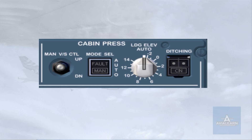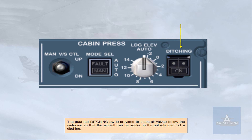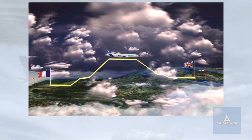The guarded ditching switch is provided to close all valves below the water line so that the aircraft can be sealed in the unlikely event of a ditching. For a better understanding of how the pressurization system works, we will go through a normal flight profile, paying particular attention to the ECAM indications.